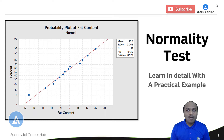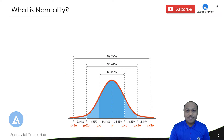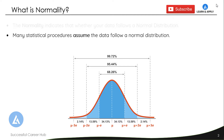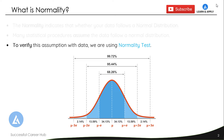Let's start with the meaning of the normality test. Normality indicates whether your data follows a normal distribution or not. This is important because many statistical procedures and tools assume that the data follows a normal distribution. Without checking this assumption, using those tools may lead to incorrect analysis of the data. That's why it's very important to verify this assumption using a normality test.